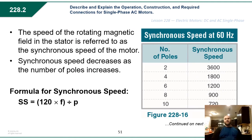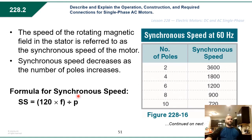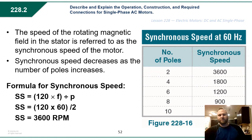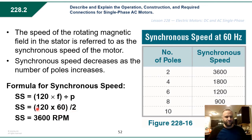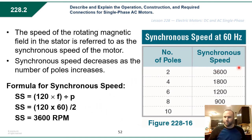The speed of the rotating magnetic field in the stator is referred to as the synchronous speed of the motor. Synchronous speed decreases as the number of poles increases — a two-pole motor has a synchronous speed of 3,600 RPM, whereas a ten-pole motor has a synchronous speed of 720 RPM. The formula for determining synchronous speed is: SS = 120 × frequency ÷ number of poles. For a two-pole motor at 60 Hz: 120 × 60 ÷ 2 = 3,600 RPM.